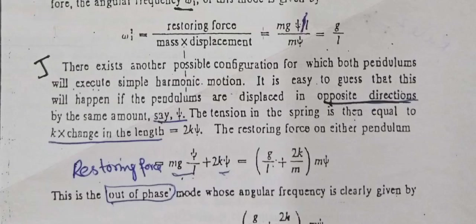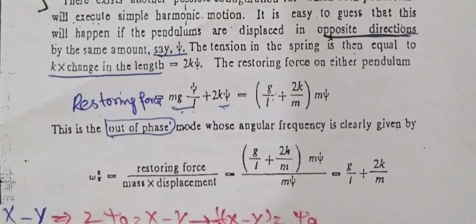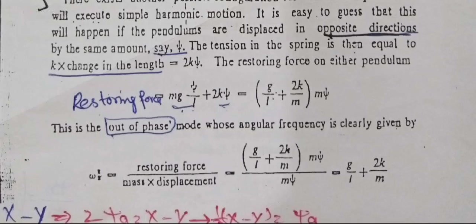دوسرے case (out-of-phase) میں، pendulums opposite directions میں same amount psi سے displaced ہیں۔ Tension in the spring is equal to k multiplied by the change in length, which gives 2k psi۔ So the restoring force is mg psi over l plus 2k psi۔ psi کو common لیں اور m بھی common لیں تو: omega_2 squared is equal to restoring force divided by mass times displacement = g over l plus 2k over m۔ اس طرح omega_2 squared is equal to g over l plus 2k over m۔